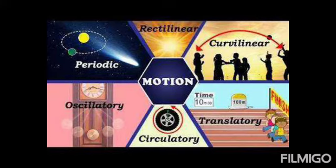Next is random motion. Random motion means that an object can move in any direction — it can move anywhere without a fixed direction, like trees swaying left and right. If there is no fixed direction of movement, we call it random motion.